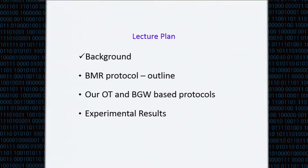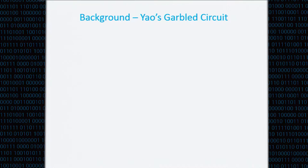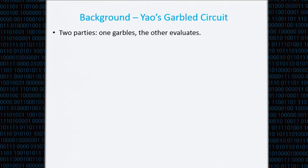Let's go over the Beaver-Micali-Rogway protocol. The BMR protocol is basically based on garbled circuits, so I'll go over Yao's garbled circuit first, which is simpler. This is a two-party protocol. We have two parties, one that garbles and the other that evaluates. All the gates are garbled in parallel, so let's see how one gate is encrypted.